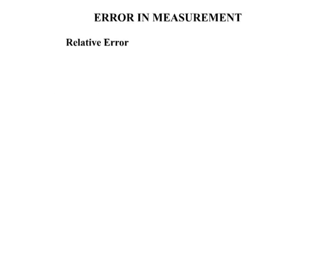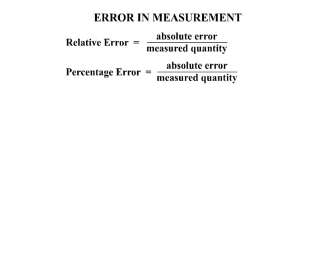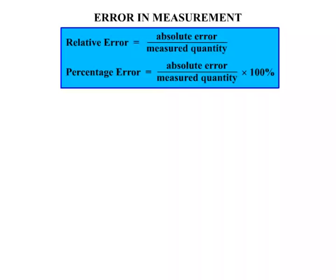Now, what about relative error? Relative error equals the absolute error over the measured quantity. Percentage error is the same — it equals the absolute error over the measured quantity — but we multiply by 100 to change it to a percentage. That's important information to remember.